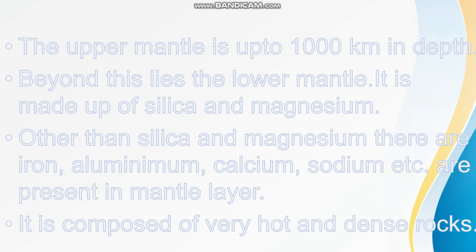The lower mantle is made up of silica and magnesium. Other than silica and magnesium, there are many other elements present in this layer, such as iron, aluminium, calcium, sodium, etc. It is composed of very hot and dense rocks.